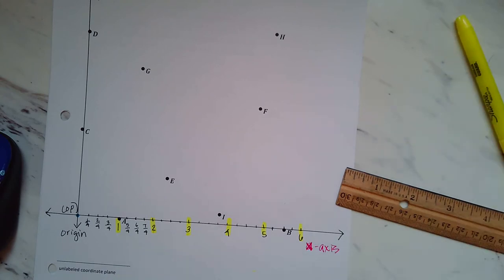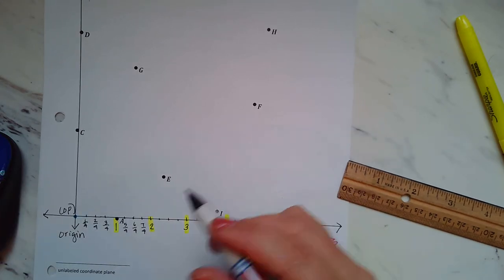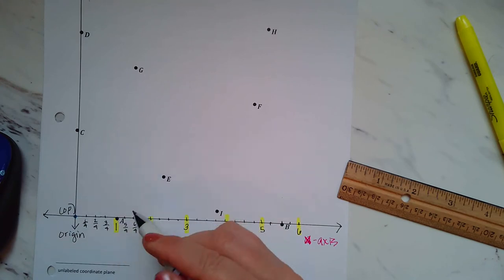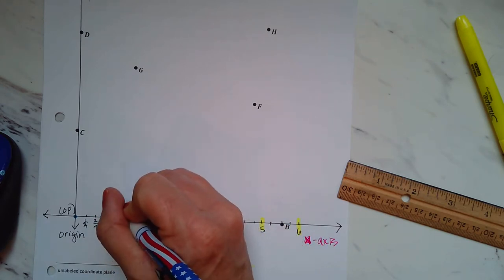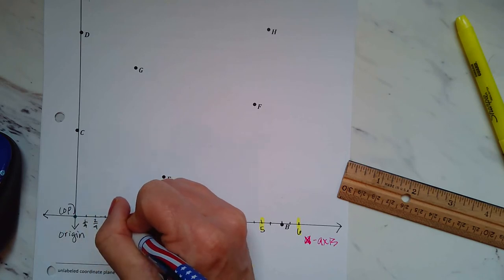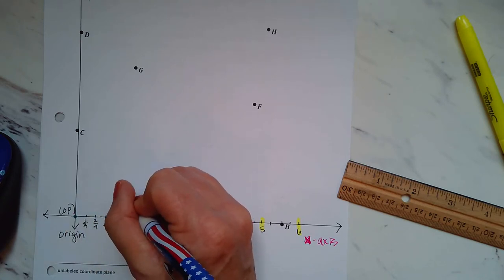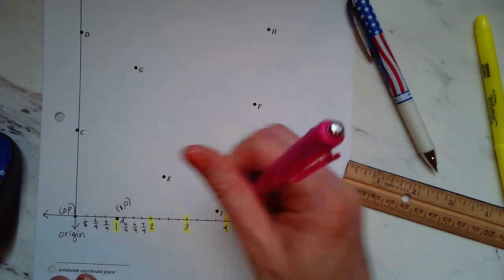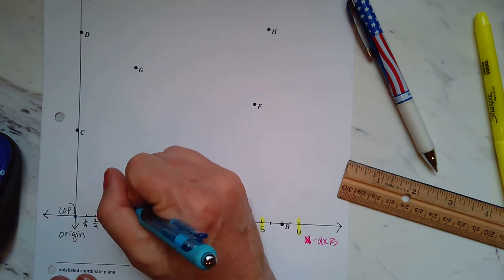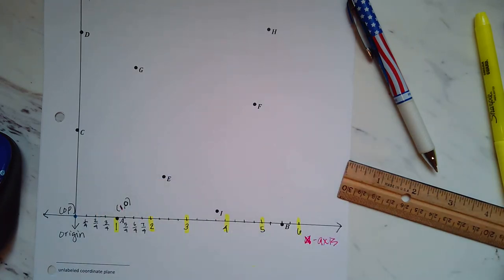So we have one-fourth, two-fourths, three-fourths all the way up. So what is the coordinate, the x and y coordinate for point A? For point A, that would be over one, up how many? Zero. One, zero.